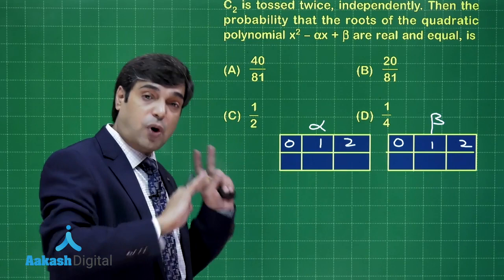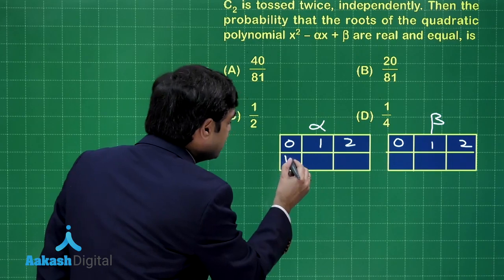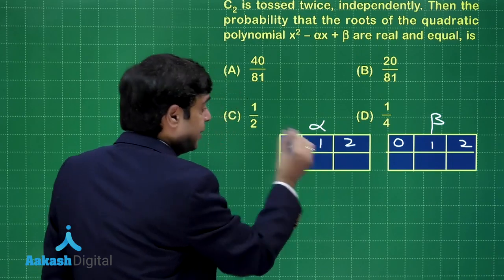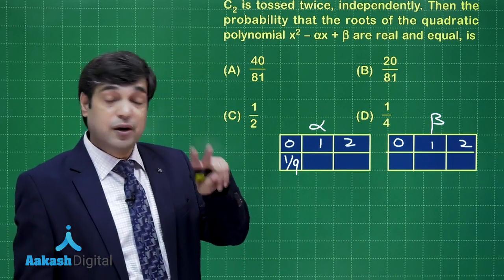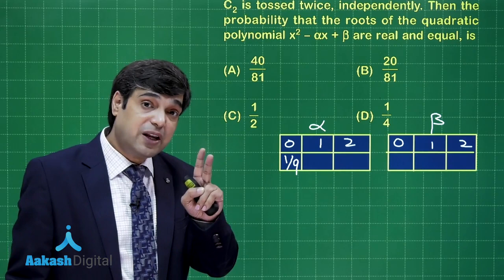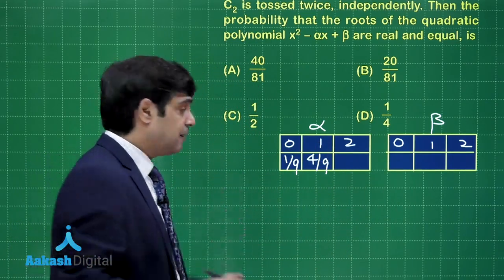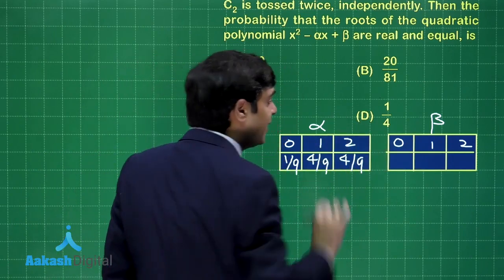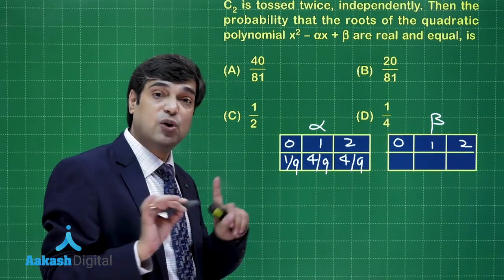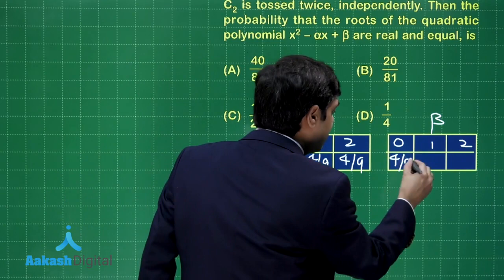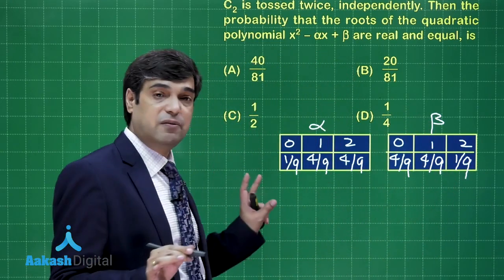Now here the probability of getting head 0 time, meaning probability of not getting heads. Probability of getting heads is 2 by 3. So for not getting it is 1 by 3. So on 2 tosses it is 1 by 9. Now here one's head, meaning head tail or tail head. Twice of 1 by 3 into 2 by 3. So that is 4 by 9. Getting both heads, that is again 4 by 9. Similarly here getting no heads, probability of getting heads is 1 by 3. Getting no heads is 2 by 3. So it is 4 by 9. Again 4 by 9. Again 4 by 9. And 1 by 9. So this is the configuration we are talking about.